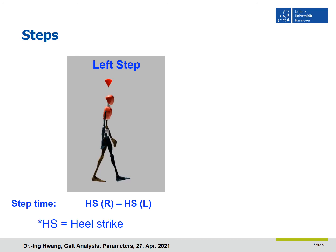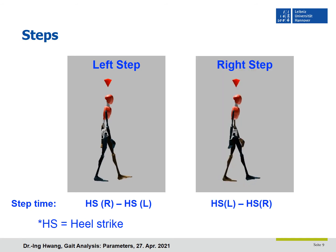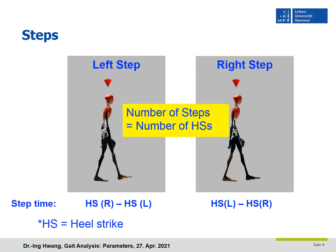Now we will see the definition of the step. The step is when the foot makes contact with the ground. When the left foot does, it is the left step; when the right foot does, it is the right step. The step time for the left leg is from right heel strike to left heel strike. The right step time is from left heel strike to right heel strike. So the number of steps is the same as the number of heel strikes. There are two steps in one gait cycle, which is one stride, so the sum of left and right step time is one stride time. On average, twice a step time is a stride time.